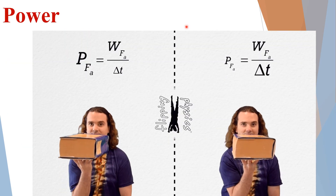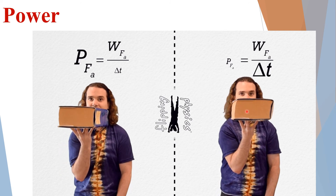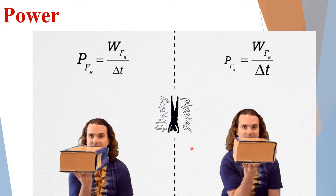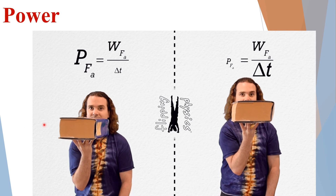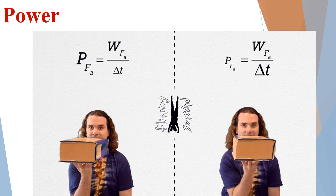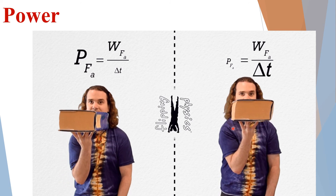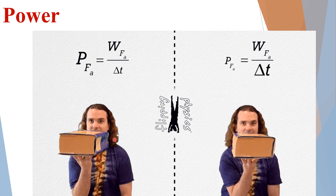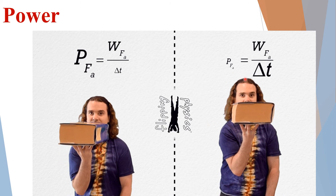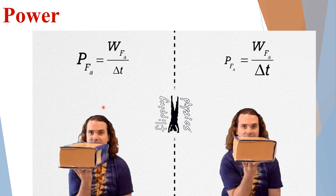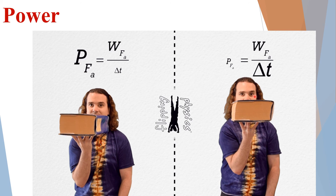In a simple demonstration, a book is displaced from one point to another when a force is applied. In both cases, the same amount of work is done, but the time duration is different. Where time duration is larger, power is less, and where time duration is smaller, power is greater.